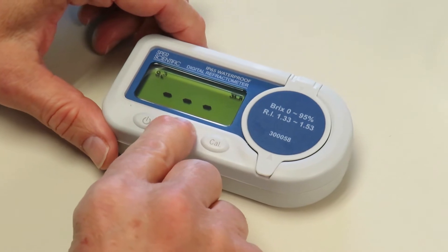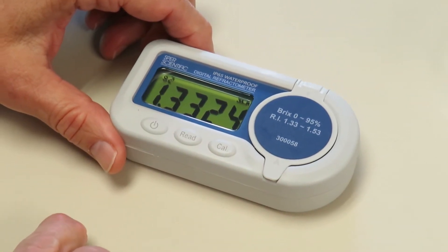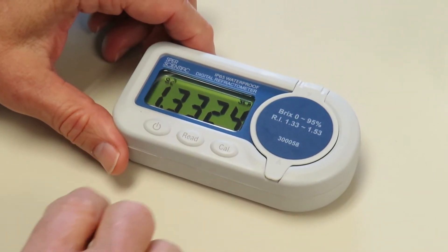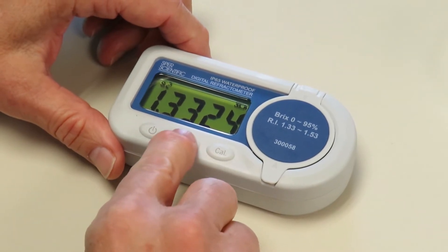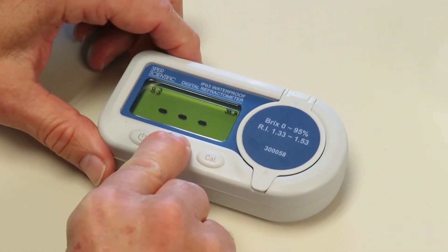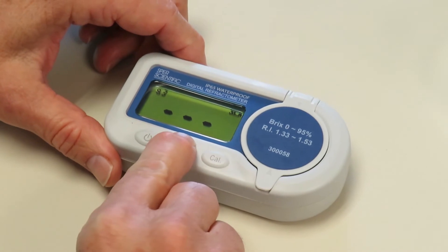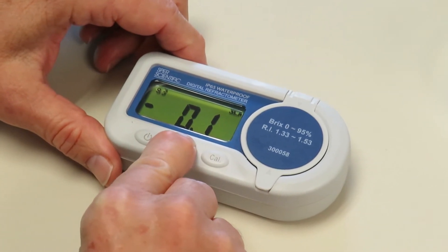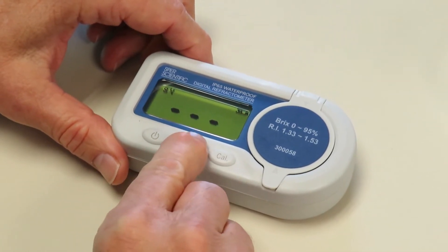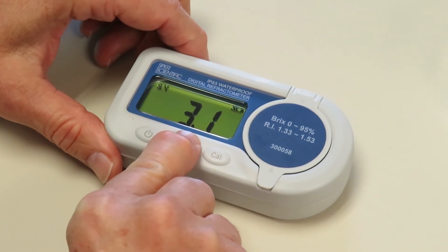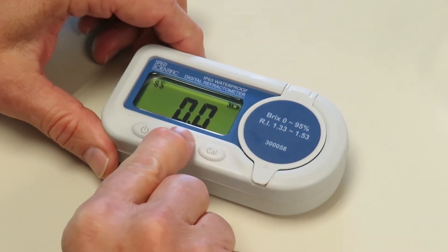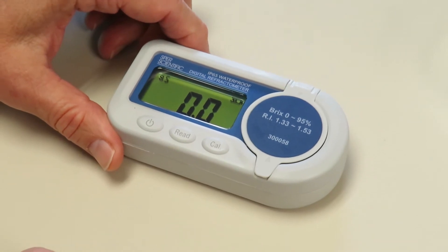If I now press Read, it's in a refractive index mode, and I can scroll through different modes. This unit has quite a few by holding the button down. So let's get back to the first mode, and here we can see that the reading is zero.